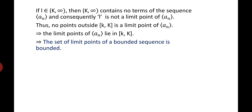If L belongs to (K, ∞), then (K, ∞) contains no terms of A_N and consequently L is not a limit point of A_N. Thus, no point outside [k, K] is a limit point of A_N, which implies all limit points of A_N lie in [k, K]. This implies the set of limit points of a bounded sequence is always bounded.